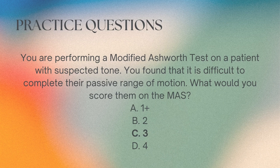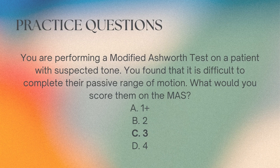The correct answer is C. You are performing a modified Ashworth scale on a patient with suspected tone and find it is difficult to complete their passive range of motion — what would you score them? The scale includes 0, 1, 1+, 2, 3, and 4. One-plus is a slight increase in tone with a catch and minimal resistance through less than half of the range of motion. Two is marked increased tone through most of the range of motion. Three is more tone where passive range of motion is difficult. Four is rigidity.